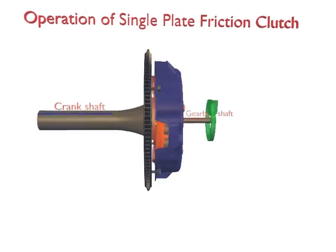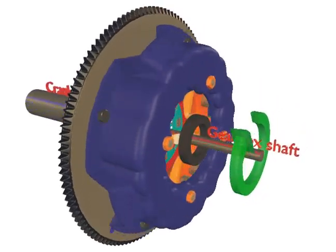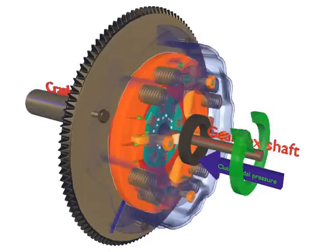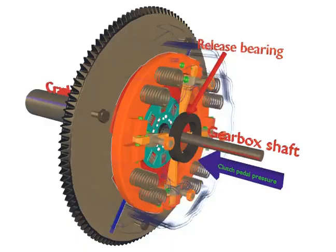Operation of Single Plate Friction Clutch. When the clutch pedal is pressed to disengage the clutch, suitable linkage moves the thrust or release bearing forward towards the flywheel to come in contact with the rotating fingers.